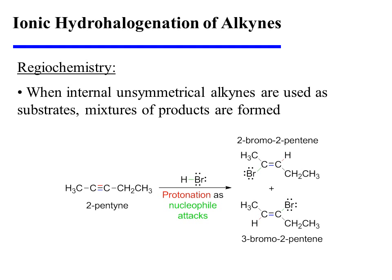When internal unsymmetrical alkynes are used as substrates, we obtain mixtures of products. For instance, in this specific example, 2-pentyne is the reactant. During the initial addition of HBr across one of the alkyne pi bonds, there is no basis for selectivity because both of the alkyne carbons have the same level of substitution. Therefore, we obtain two regioisomeric vinyl bromides.